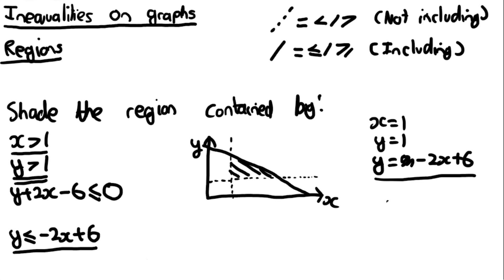A quick note: some textbook questions ask for the area of the shaded region. If it's not a simple shape, split it into smaller shapes and solve individually. Practice region questions from the book, as drawing accurate graphs on a tablet isn't feasible here. This is the end of the chapter — the next chapter starts content that is new to A-level and not in the GCSE specification.